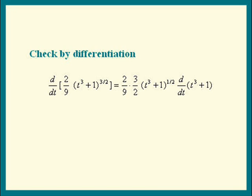Then differentiate whatever is raised to the power. The 2's cancel. The 3 goes into the 9. So there's the 1/3 times (t³ + 1)^(1/2). Now differentiate t³ + 1. We get 3t². The 3's cancel. And there's the integrand.